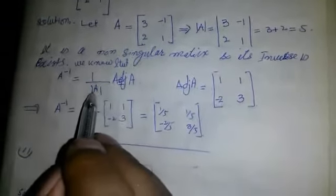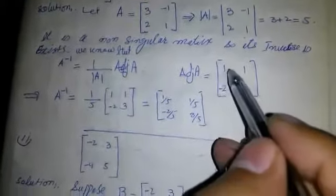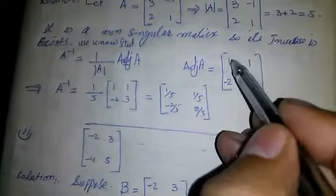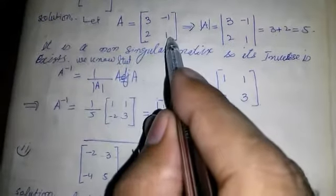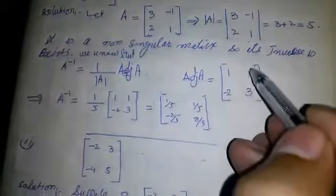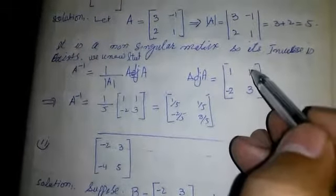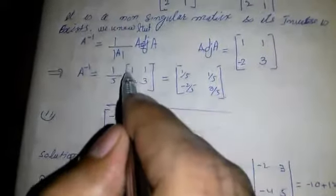We know that A⁻¹ is equal to 1 over the determinant of A, multiplied by the adjoint of A. The adjoint of A is found by interchanging the first diagonal elements with each other, and changing the signs of the other elements, giving adjoint A = [[1, 1], [-2, 3]].